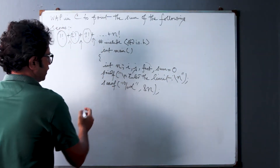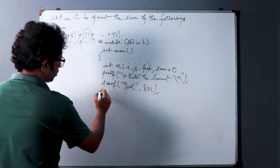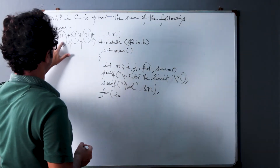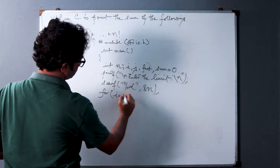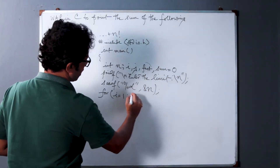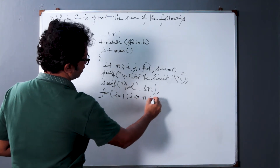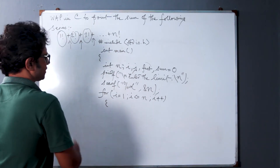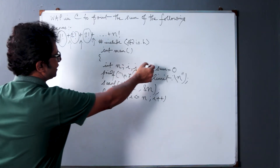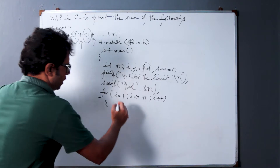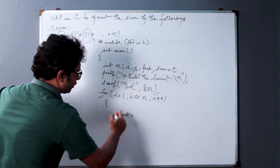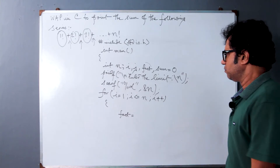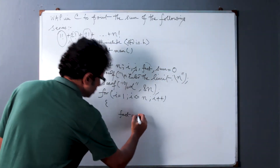Now let us start the calculation part — the logical portion starts from here. For i equal to 1, i less than or equal to n, i plus plus. This is the outer for loop. Inside the outer for loop we have to initialize fact, because each time we enter this loop fact will be calculated again inside the inner for loop. So fact is initialized to 1.